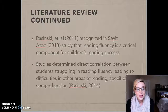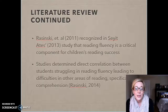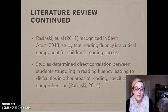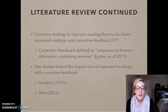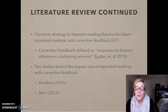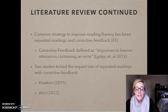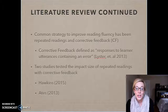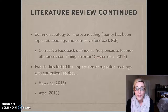Continuing the literature review, a study from Rosinski states that reading fluency is a critical component in terms of overall reading success in students, and shows a direct correlation between students who struggle in reading fluency also struggling in text comprehension — a problem I was certainly seeing among my third grade students. A way to improve reading fluency and text comprehension has been through repeated readings, meaning reading a text multiple times, and corrective feedback, which is defined as responses to learner utterances containing an error. Essentially, a teacher addresses the error a student made — whether an omission, insertion, or reversal — teaching the student to self-correct and be aware of the errors they're making and why.